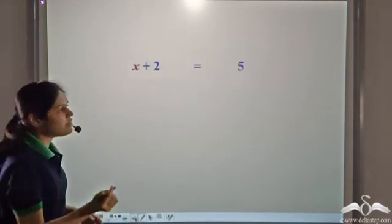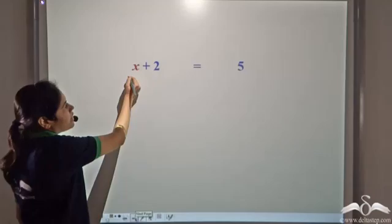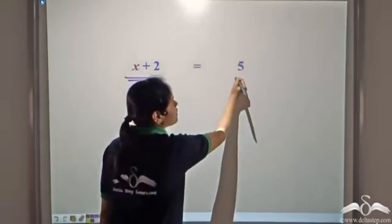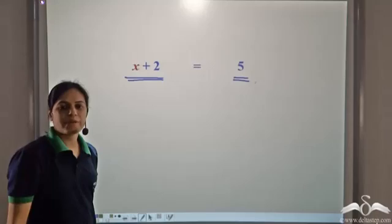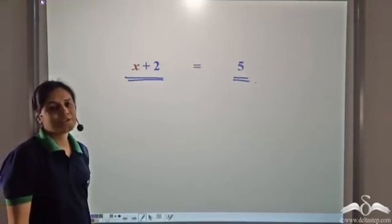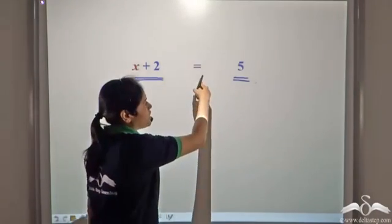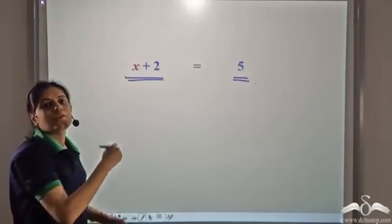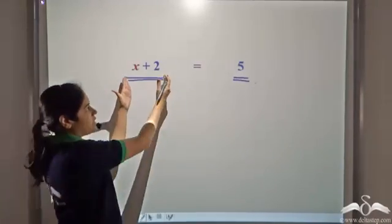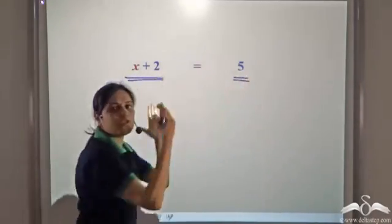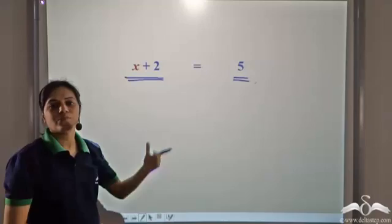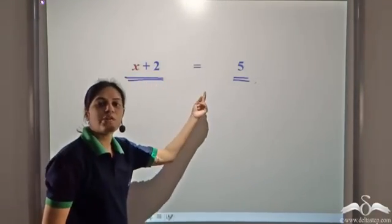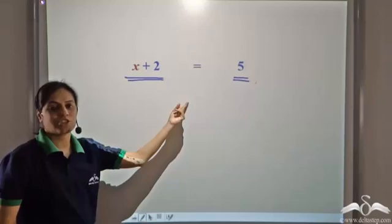Have a look at this. x + 2 is an expression and 5 is an expression. x + 2 = 5 is an equation because it states that this expression is equal to that expression. So x + 2 is an expression, and x + 2 = 5 is an equation.